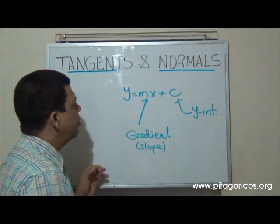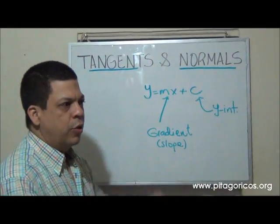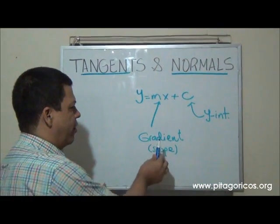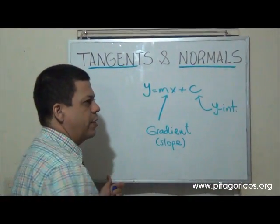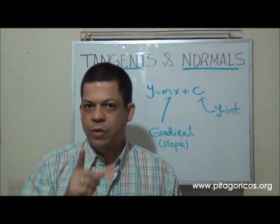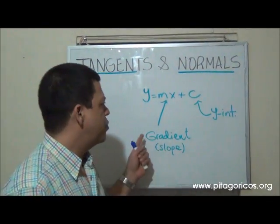So if we want to find the tangent or the normal to any curve, we need to find the gradient and the y-intercept. And this is what we study in mathematics as well. So let's do an example to see how to find these two values.